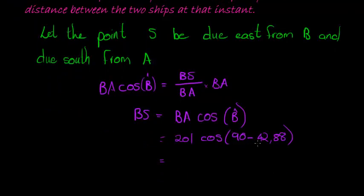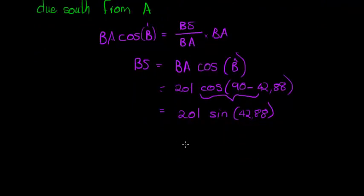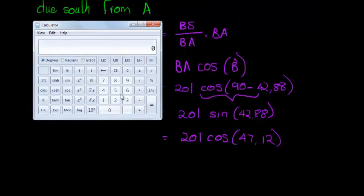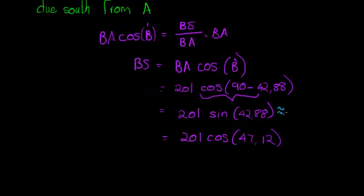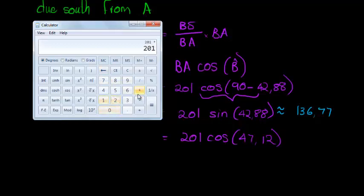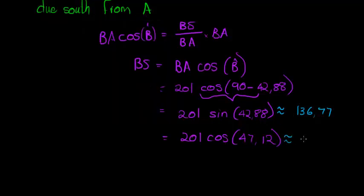There are various ways to do it. For example, you can change cos(90 minus angle) into sine. So this would be the same as 201 times sine of 42.88. Or you can simplify the angle to get 47.12 and say it's 201 times cos of 47.12. Both of these answers would be exactly the same. Let's verify: 201 times sine of 42.88 is approximately 136.77. And 201 times cos of 47.12 is also 136.77.